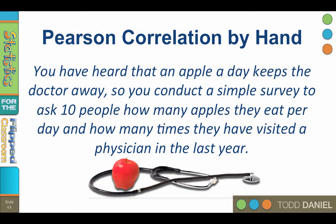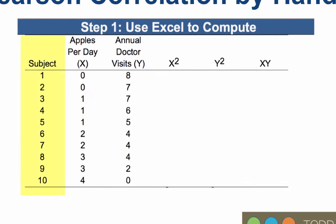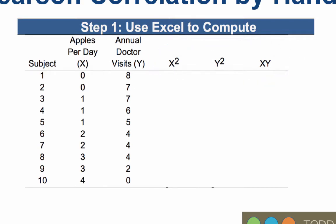You have heard that an apple a day keeps the doctor away. So you conduct a simple survey to ask 10 people how many apples they eat per day and how many times they have visited a physician in the last year. The subject variable is a random participant identification number, not used for analysis — it just helps keep track of the 10 participants. X is the number of apples eaten per day, which predicts Y, the number of doctor visits. We will need to create three columns: x squared, y squared, and x times y, plus the sums of each column.